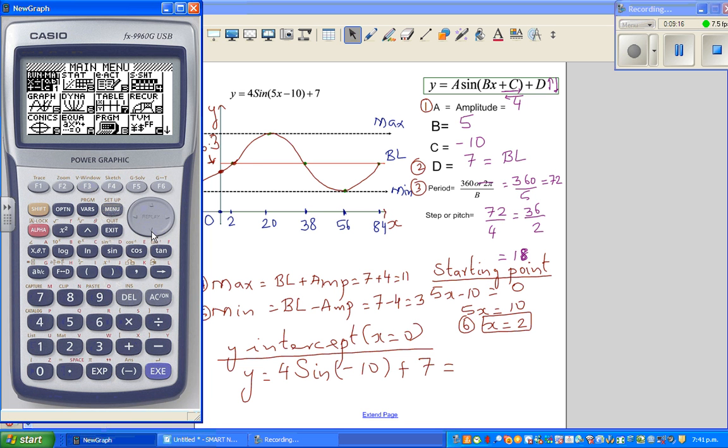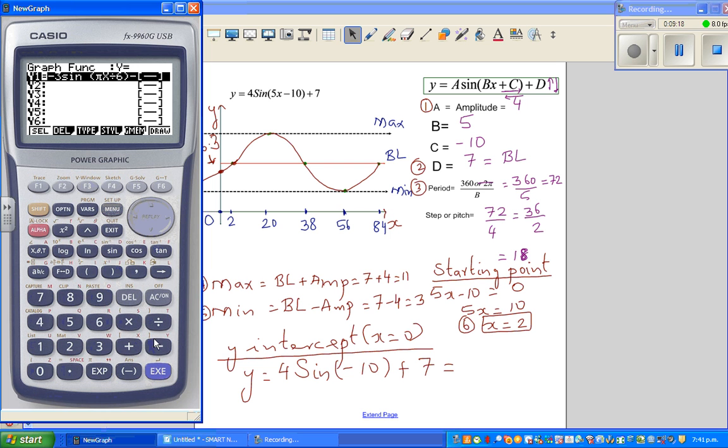So go to your graph menu and delete it. And the equation was 4 sine bracket 5x minus 10 plus 7. And you need to look at your scale. Your scale, I want from 0 to 84.